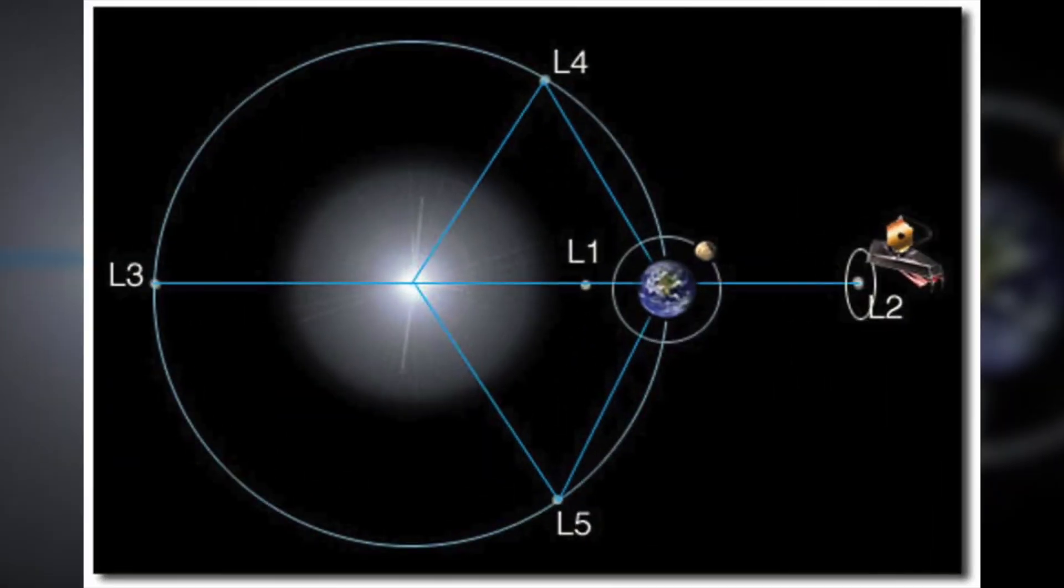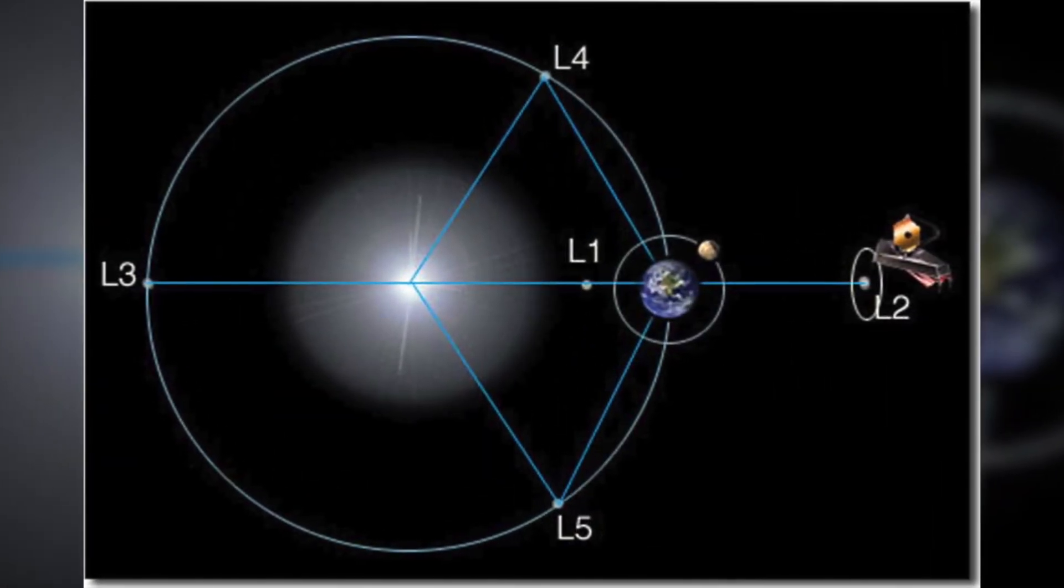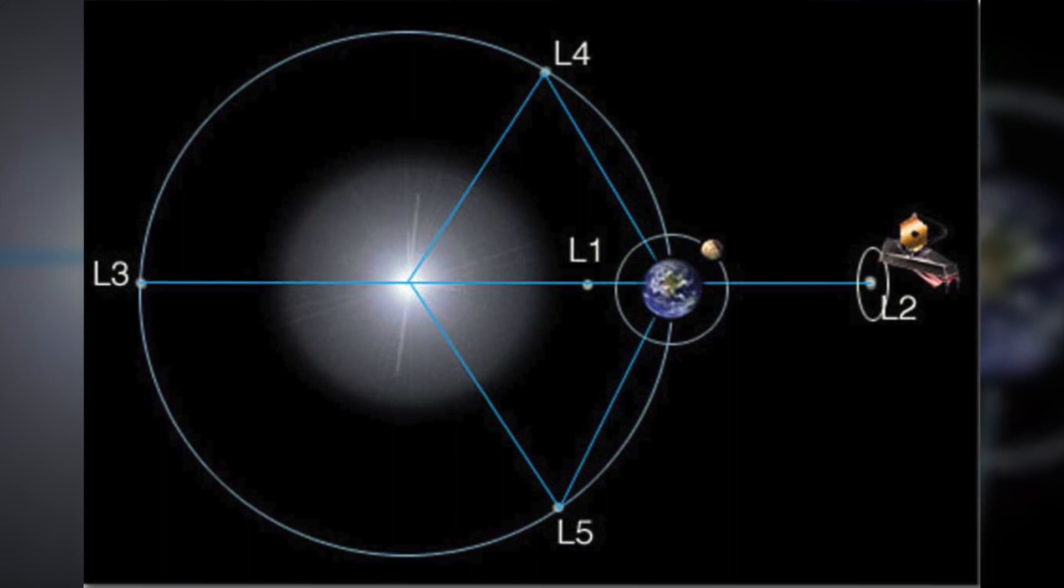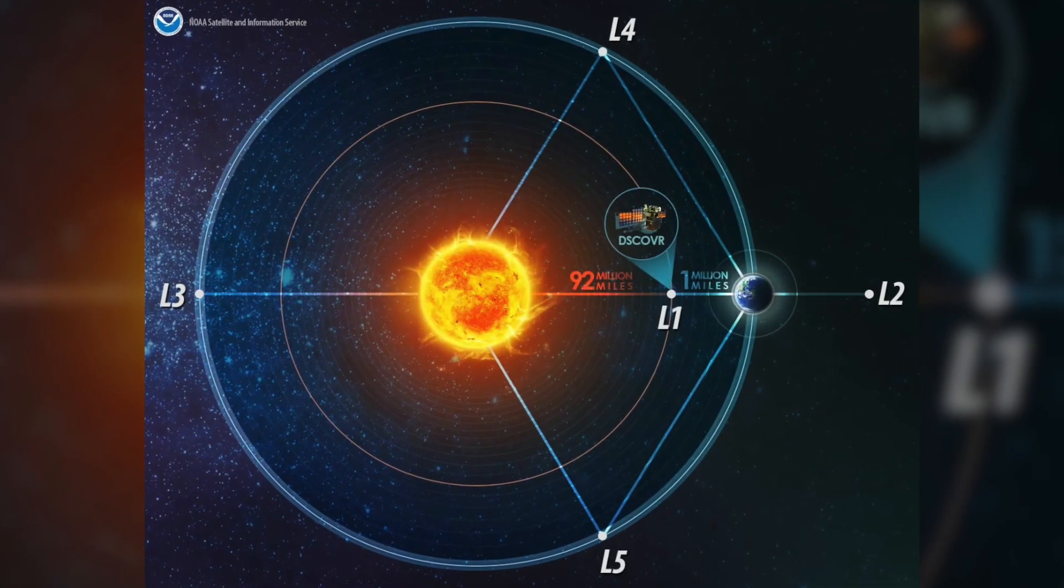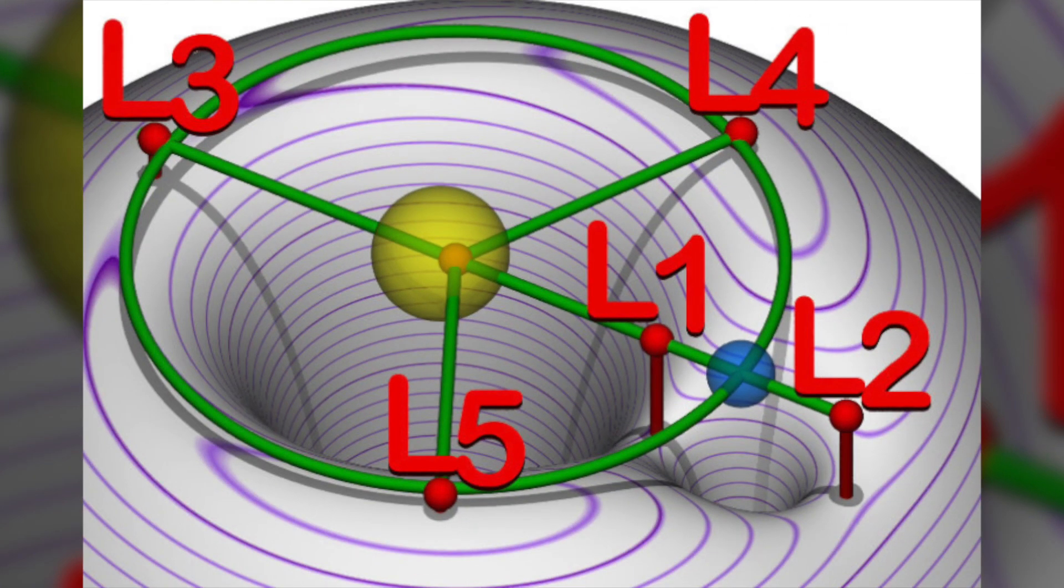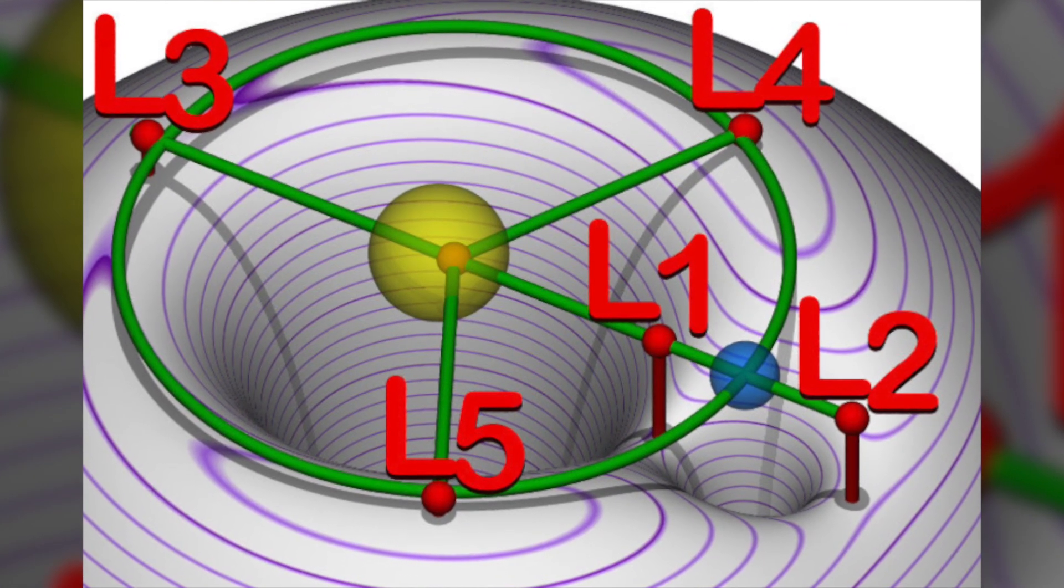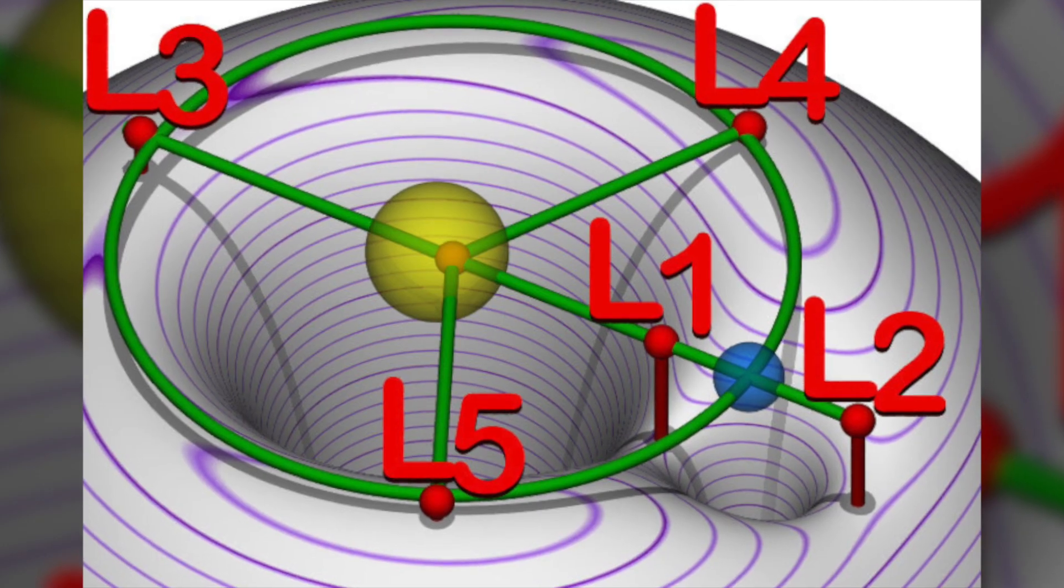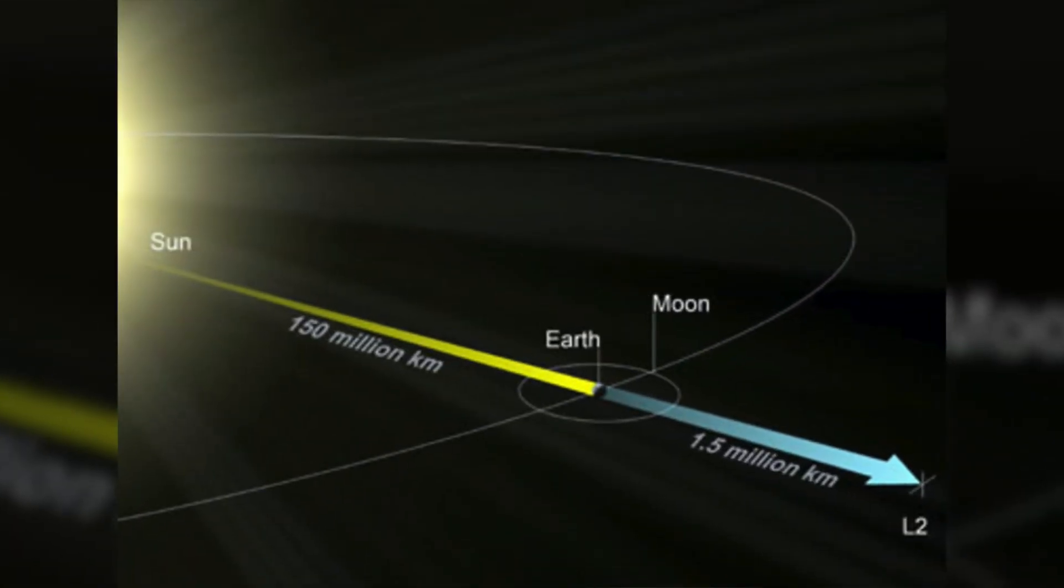Now, safely nestled 1.5 million kilometers from Earth in a region of space known as the second Lagrange point, the Webb is orbiting the sun while remaining in line with the Earth. L2 is a sweet spot in the solar system that allows the telescope to use minimal energy to stay in place while remaining cold enough to take photographs with impeccable clarity.